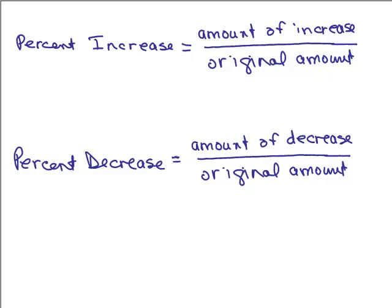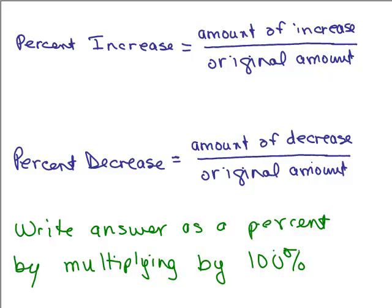We also have percent decreases. That would be like when you go to a store and something's on sale, the price of the item decreases in value. But notice it looks almost the same, the formula here. Percent increase is the amount of the increase over the original amount. The percent decrease is the amount of decrease over the original amount. So it doesn't matter whether something goes up in price or you're getting demoted, you're losing money. Something's either going up or down. There's a certain amount it goes up or a certain amount it goes down. That's what goes in the numerator. And then the original amount goes in the denominator. After you set up your fraction, you could reduce it first and then multiply by 100%. You're trying to write your answer in terms of a percent.